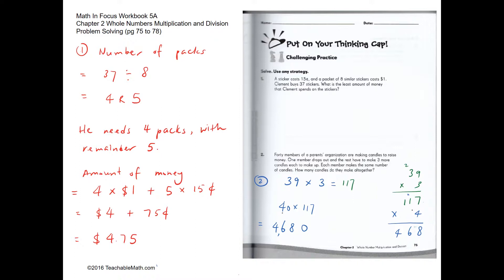For number 1, we have to find out the least number of packets he can buy. So 37 divided by 8 gives us 4 packets with a remainder of 5. The amount of money he has to spend is 4 packets at $1 each, and the remaining 5 stickers at 15 cents each. So it's 4 times $1 plus 5 times 15 cents, which gives us $4.75.